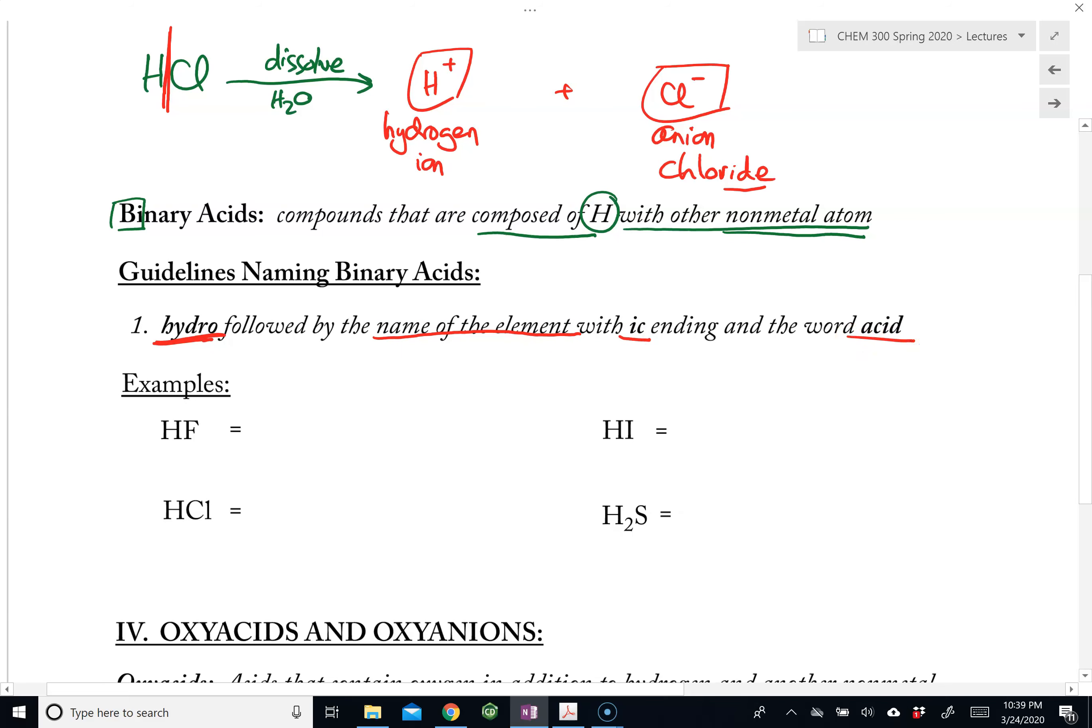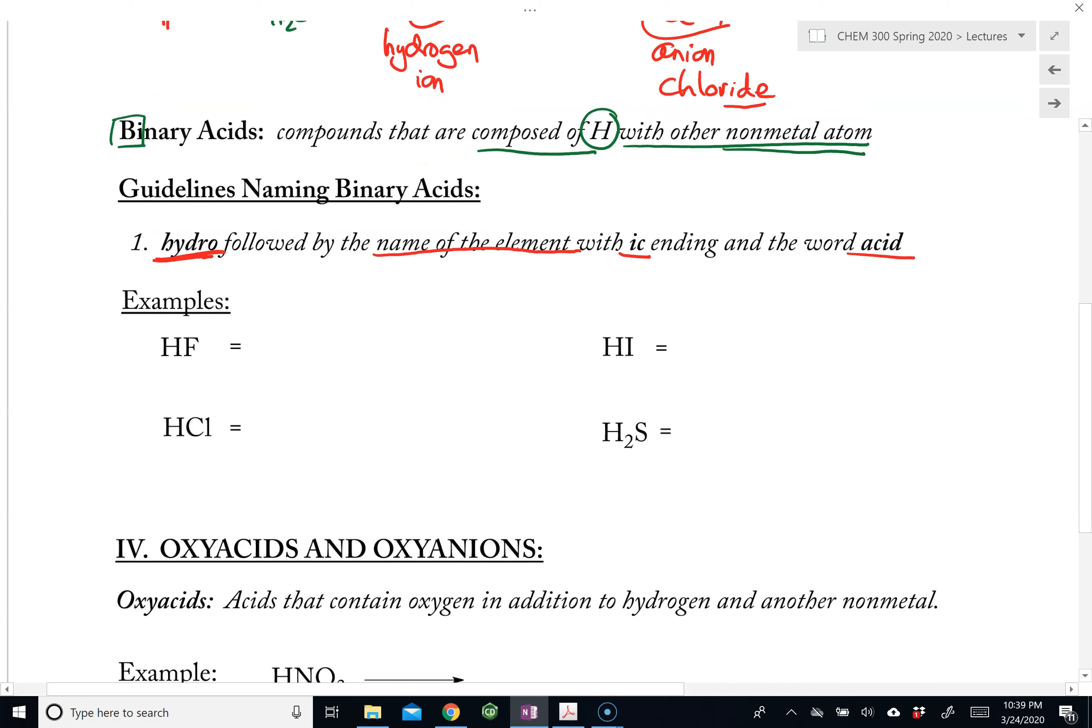For example, HF would be named as hydrofluoric acid. HCl would be hydrochloric acid. HI, hydroiodic acid.